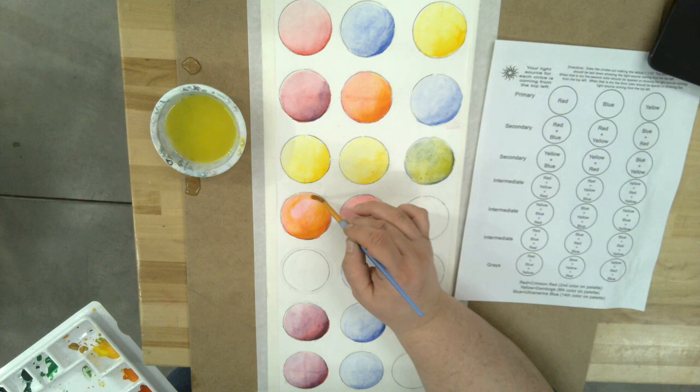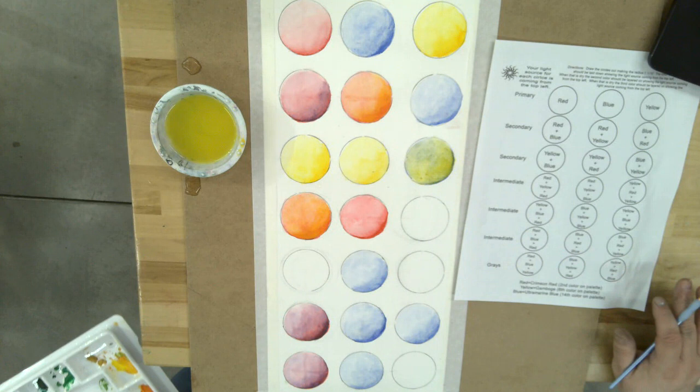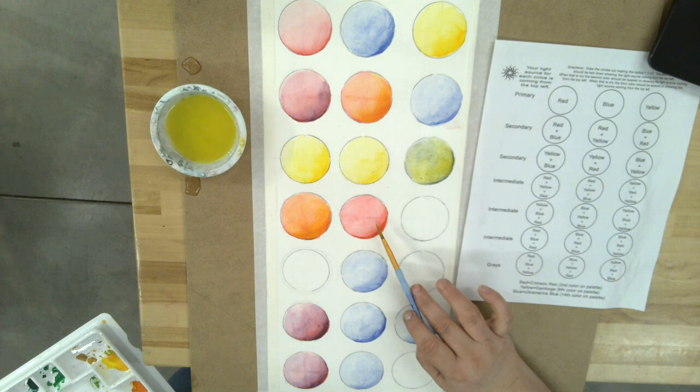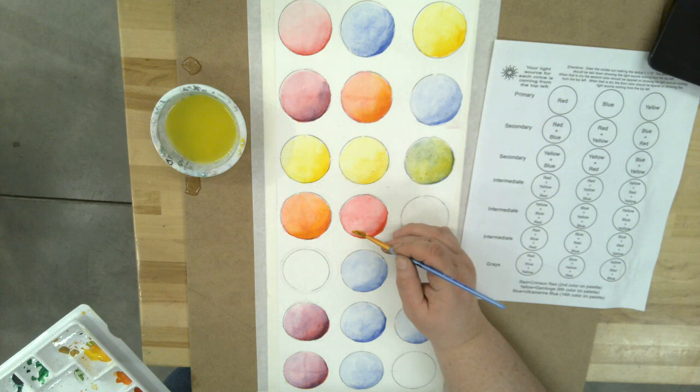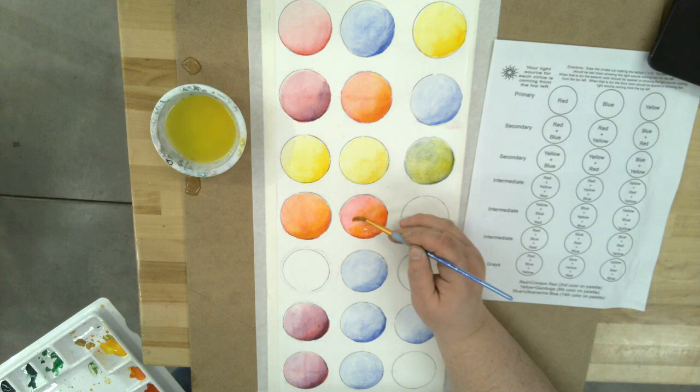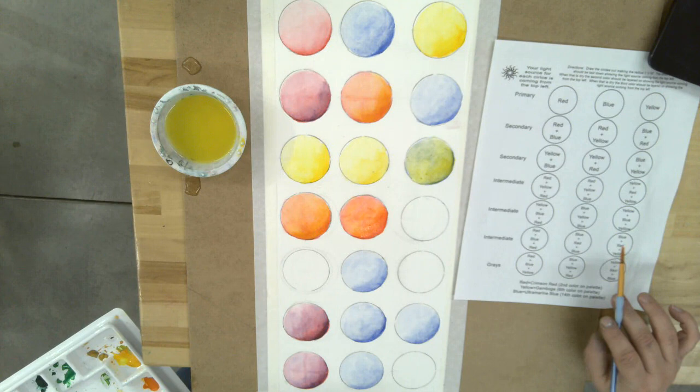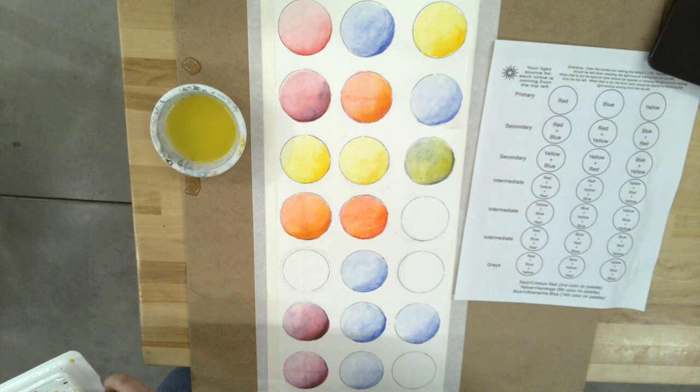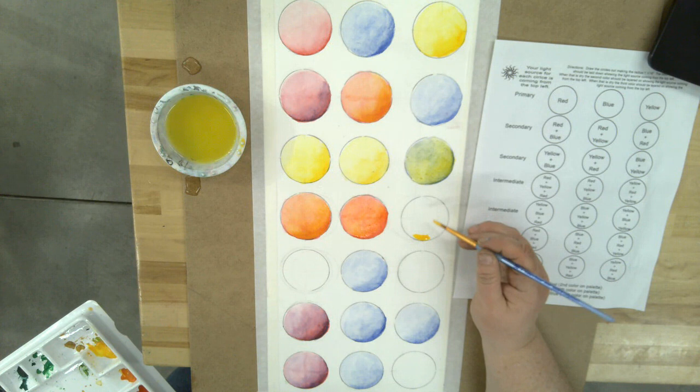You can see how these two are similar because they're the exact same right now. The next one on our list is red plus yellow and eventually we'll add blue to it, so it should look similar to the one circle that I just did next door. Then the next one is yellow, and eventually we're gonna add red and yellow over the top of that.